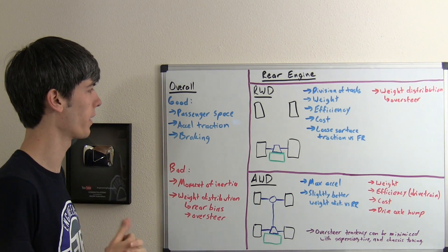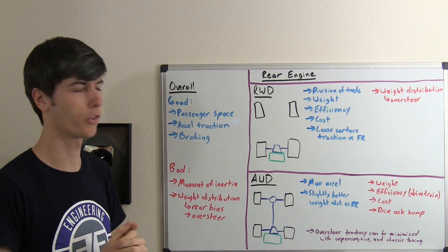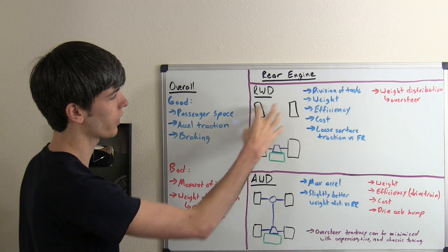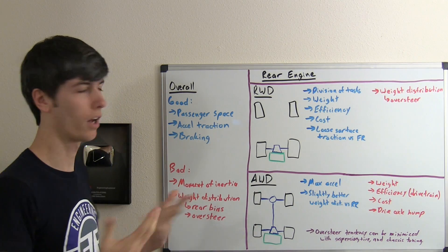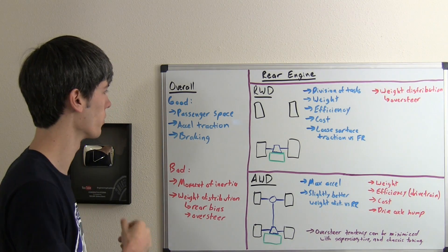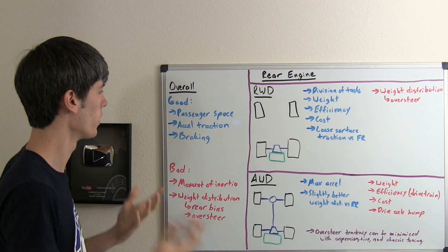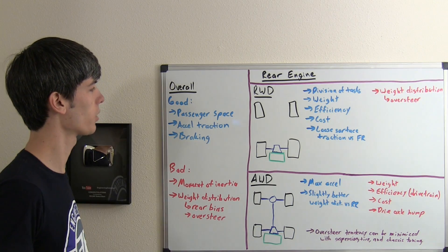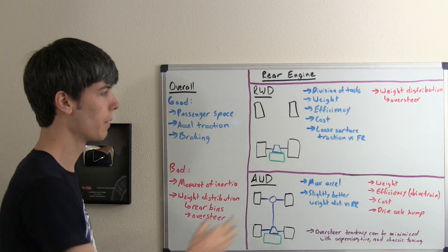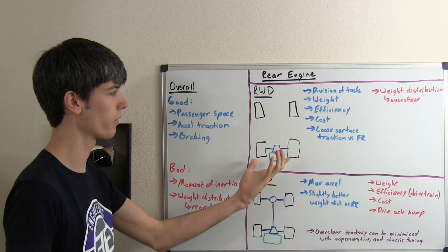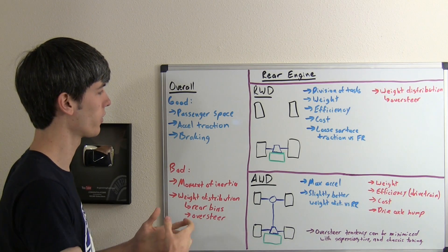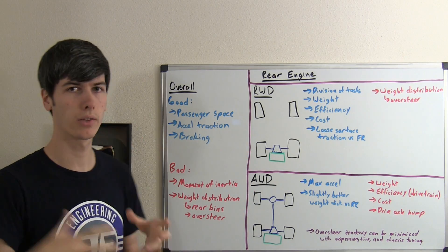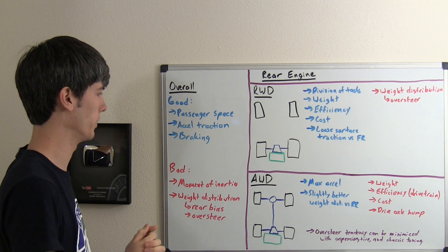Overall, what's good about it? You've got plenty of passenger space. You're keeping that engine outside of the passenger compartment, much like a front-mounted engine and unlike a mid-mounted engine. Acceleration traction is really good because you've got the majority of the weight on the driven wheels—the rear wheels or all the wheels. As you accelerate and you have load transfer to the rear wheels, acceleration is quite good.